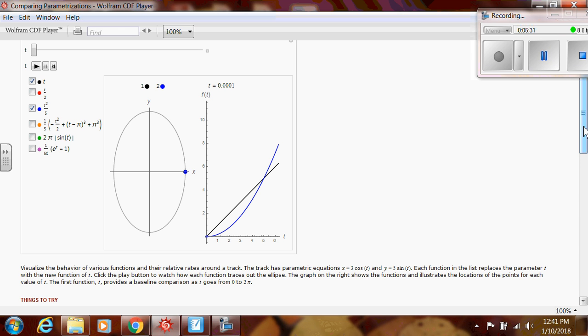So I wanted you to see that the equations, if you look down here at the very bottom, it says the track has parametric equations x equals 3 cosine of t, y equals 5 sine of t. But what we're changing is what the parameter is. So this just shows you that you can have the same parametric equations and change the parameter. And it's going to change how that's traced. So these parametric equations give us this ellipse shape. The graph on the right is the parameter. It's showing us the parameter.